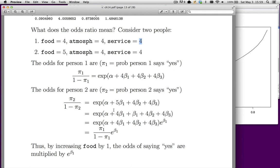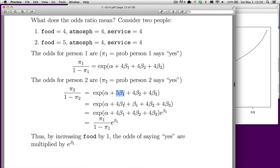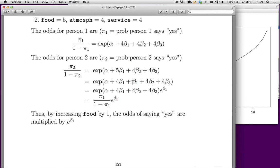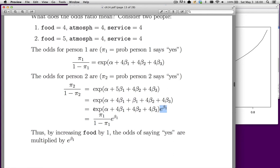The odds for person two are e^(α + 5β₁ + 4β₂ + 4β₃). I'll rewrite 5β₁ as 4β₁ + β₁. When you have a sum in an exponent, if you bring something out, it gets multiplied. So bringing β₁ out gives e^β₁. Now look—this remaining expression equals the odds for person one.